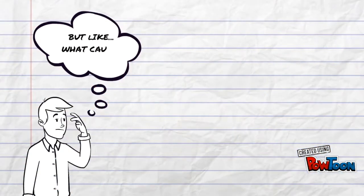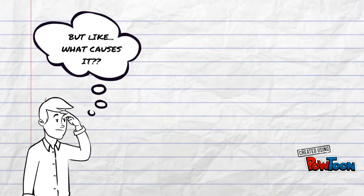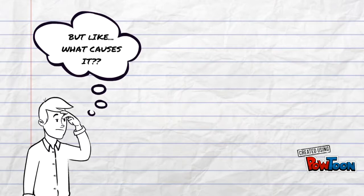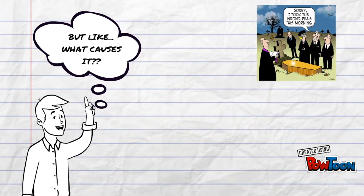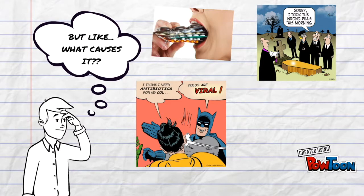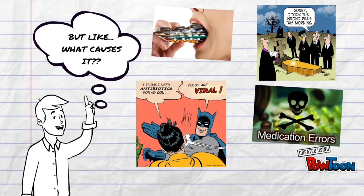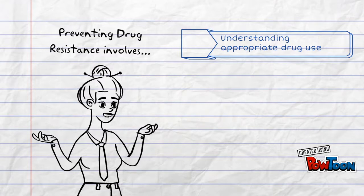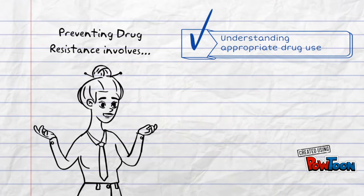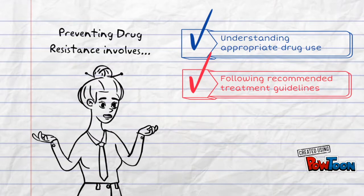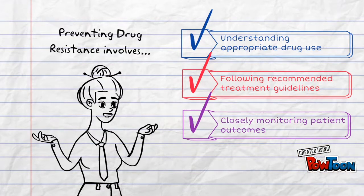Drug-resistant tuberculosis is typically caused by misused medication. Examples include patients who do not follow treatments as prescribed — either over or under use — providers who prescribe the wrong treatment, and poor quality medications. Preventing drug-resistant tuberculosis involves patients and providers understanding appropriate drug use, following recommended treatments, close monitoring of patients throughout treatment plans, and avoiding exposure to drug-resistant TB.